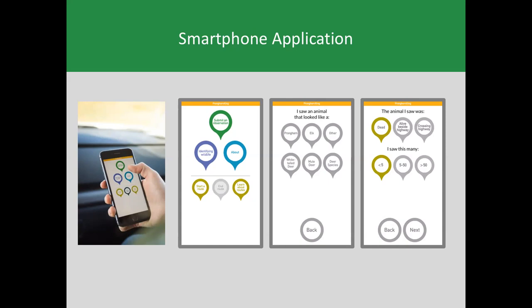You can submit an observation, which prompts you to say what the animal looked like, whether the animal was dead, alive, beside the highway, or crossing the highway, and how many you can see. What I really want to point out is a button on the first image of the mobile app that says 'start a route.' One of the biggest limitations with citizen science data is that it's often just observational data — presence and absence — and we're limited in how we can analyze it because it doesn't tell us anything about effort, or give a sense of zero values when you didn't see an animal.